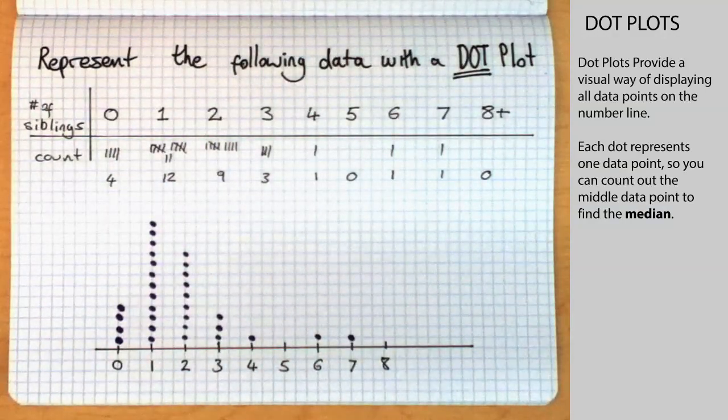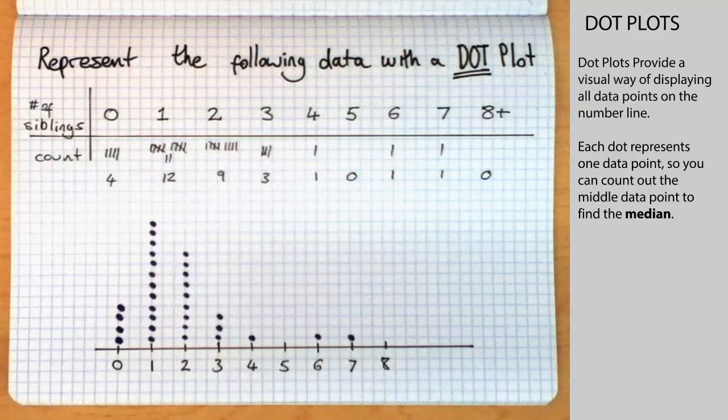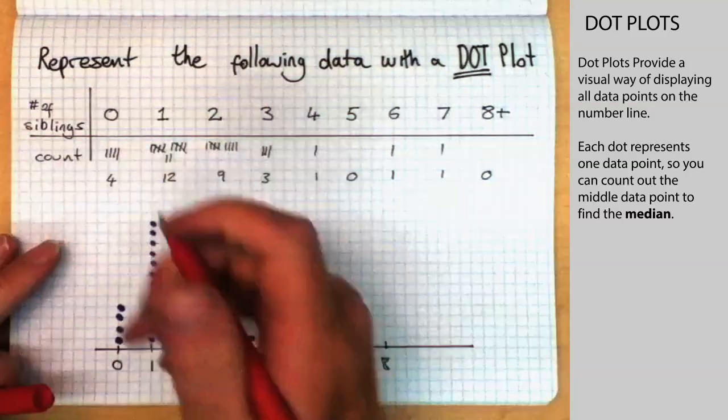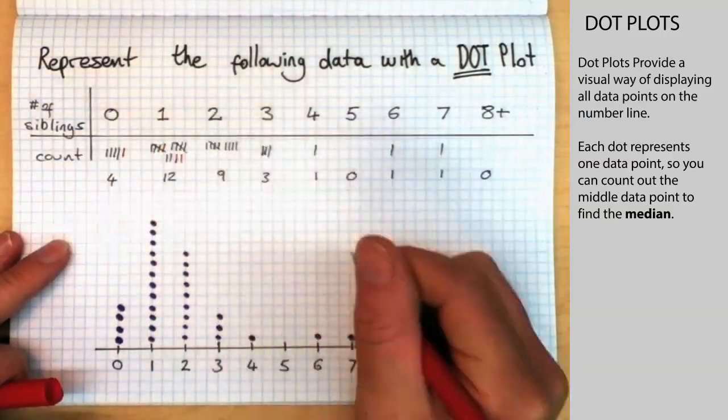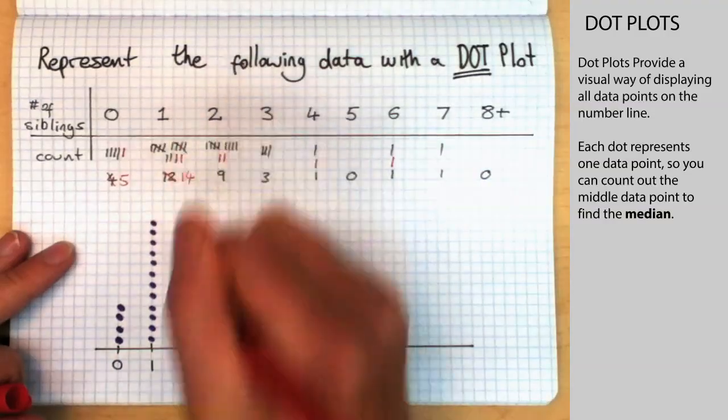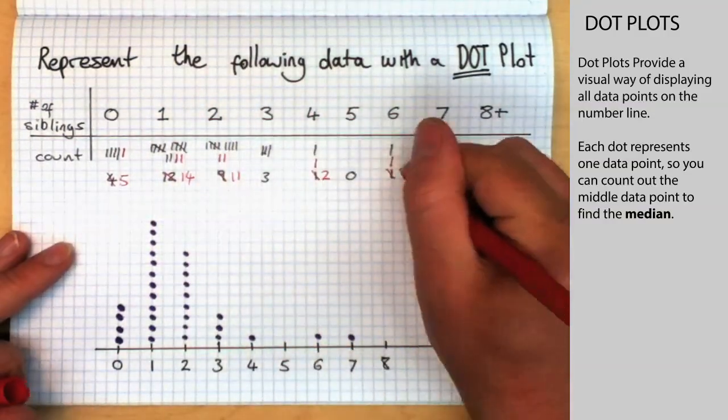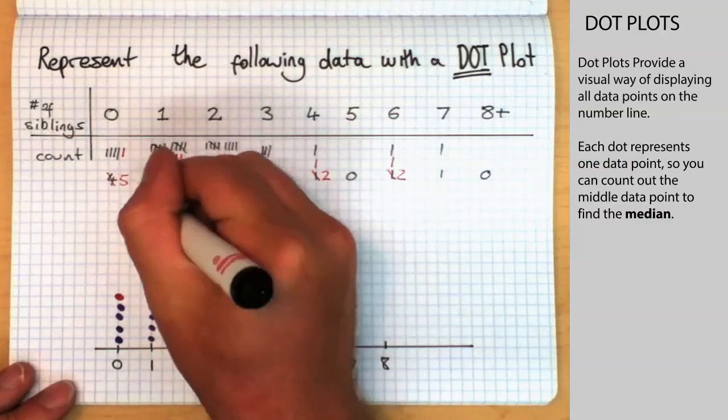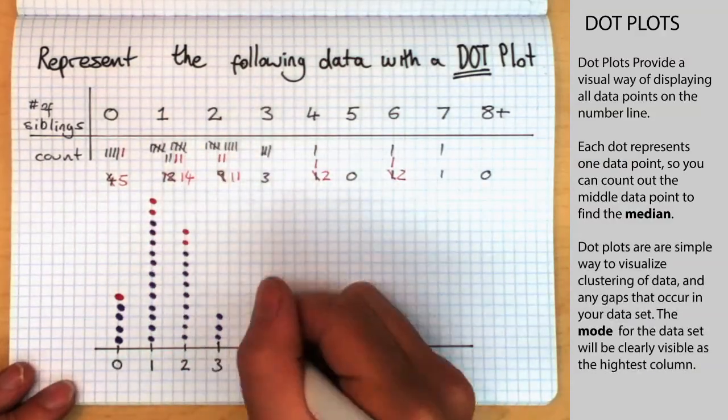Something that makes a dot plot really useful is that we can continually add data to it until we're done. For example, if six new people show up the following day and want their data added to the chart, we can quickly update the tally count, and then it's a very simple case to add those last few data points to the chart.